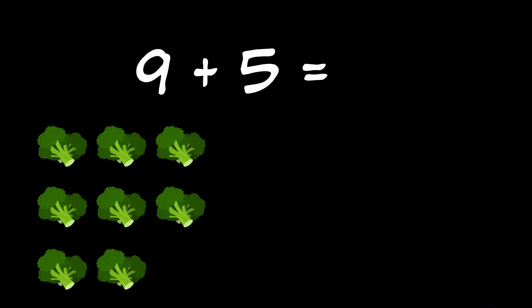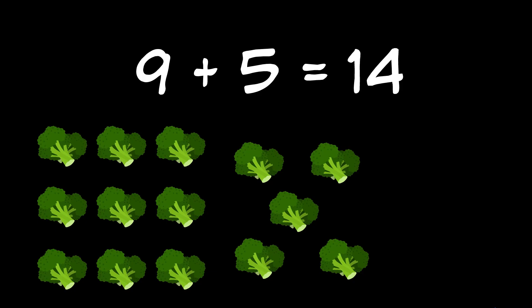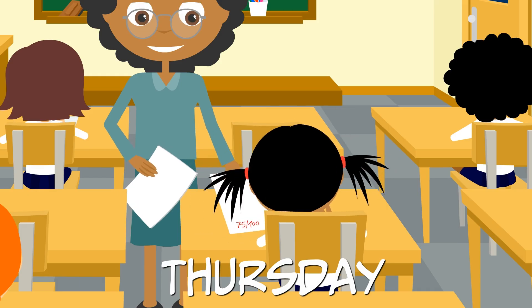If we have nine broccolis, and add another five, how many do we have in total? Fourteen broccolis. Did you get that one right? Yay!